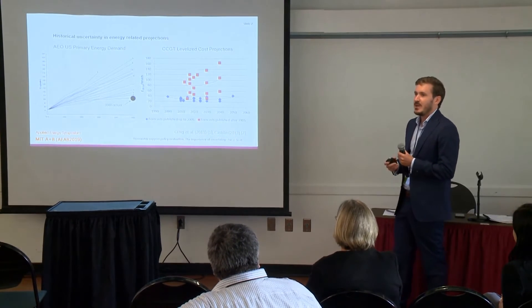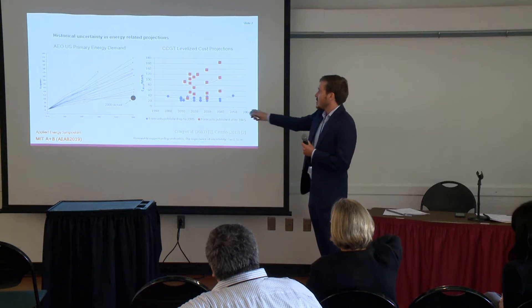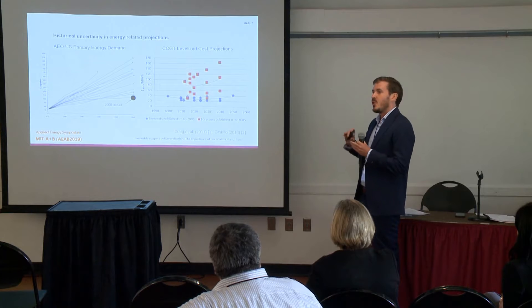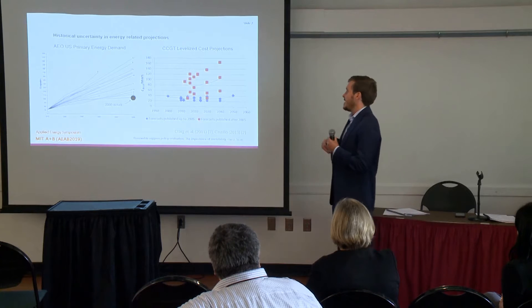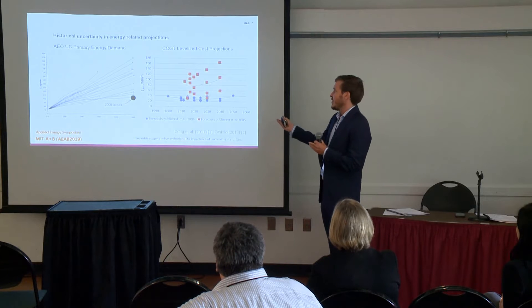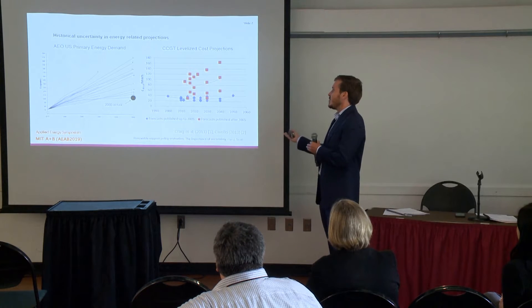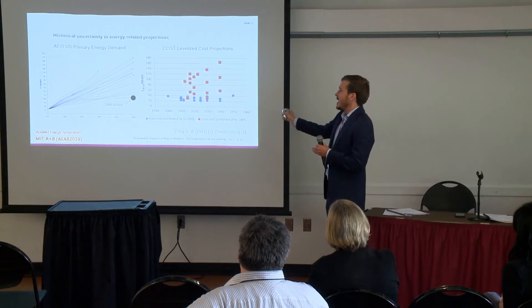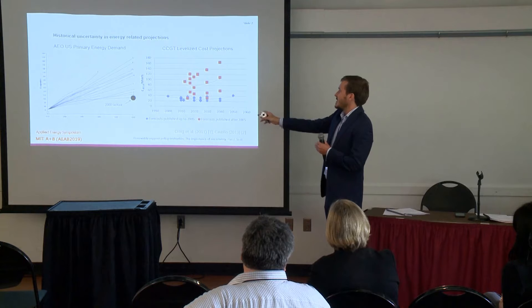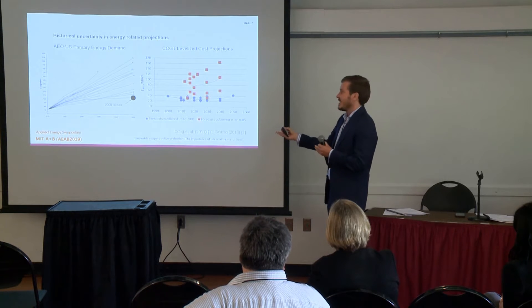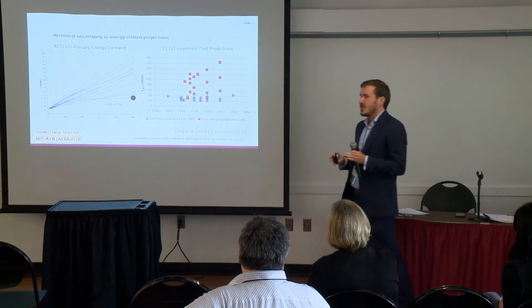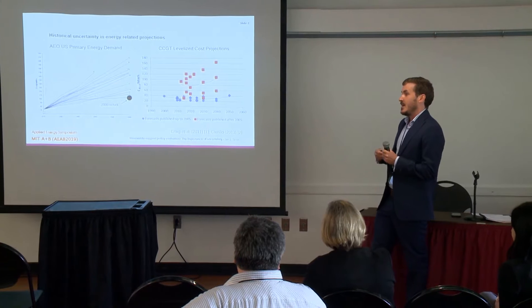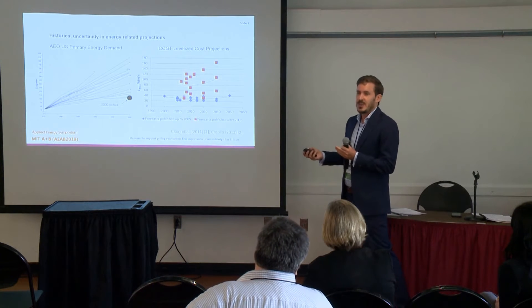This next one is my favorite. In blue we have forecasts for the levelized costs of a CCGT from before the year 2005, and in red we have forecasts after 2005. It's not just that after 2005 the average is three to four times higher — before 2005 we had no idea about this uncertainty. We basically had a consensus about what this was going to cost. These are very material inputs for investors and they have to take this into account.